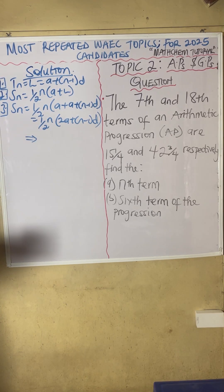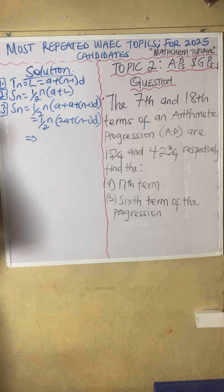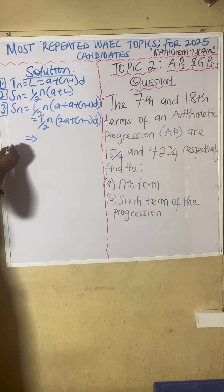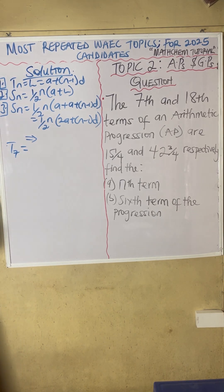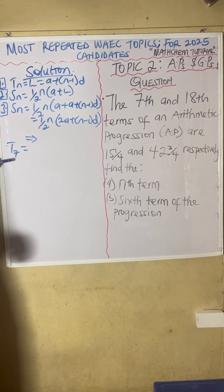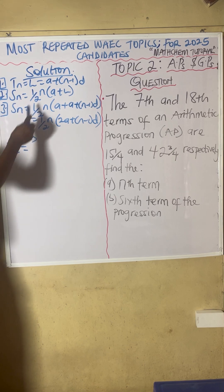The question says the 7th term and the 18th term of an AP are 15 and one quarter, and 42 and three quarters respectively. So for the 7th term, that'll be T7 equals — and look at this — A, we don't know A, plus N, whereby N is 7. As you can see, N is 7 here.